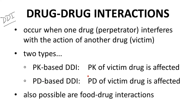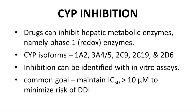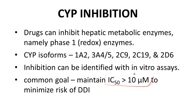Note that food and dietary supplements can also cause PK and PD-based drug interactions. PK-based DDIs often arise from inhibition of metabolic enzymes, especially cytochrome P450s, which are responsible for phase 1 redox reactions in the liver. The CYP isoforms most active in drug metabolism are 1A2, 3A4, and 3A5 — which are especially important — as well as 2C9, 2C19, and 2D6. CYP inhibition can be readily monitored through enzyme inhibition assays. A common goal for a discovery program is to keep the IC50 of late leads above 10 micromolar in order to reduce the risk of a compound being a perpetrator of a DDI.